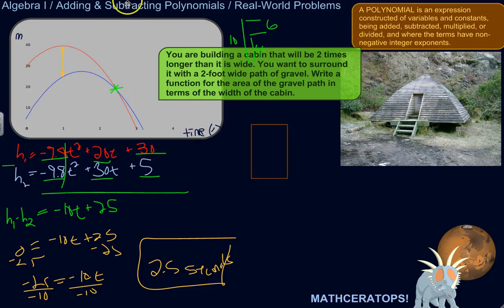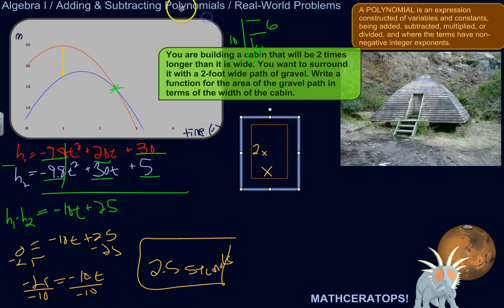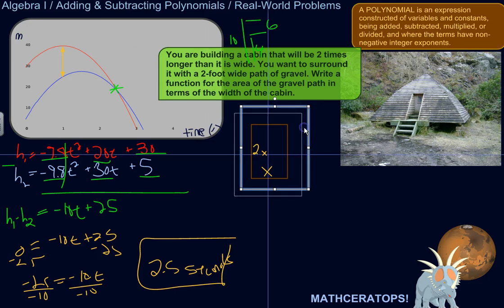Write a function for the area of the gravel path in terms of the width of the cabin. So maybe you want to figure out the area of the gravel path because maybe you've got some gravel available and you want to figure out, well if I design the cabin this way would I have enough gravel to surround it with a two foot path or am I going to have to adjust that. So I want a cabin that's two times longer than it is wide because it looks nice that way. I'm kind of simplifying things for the sake of this example.